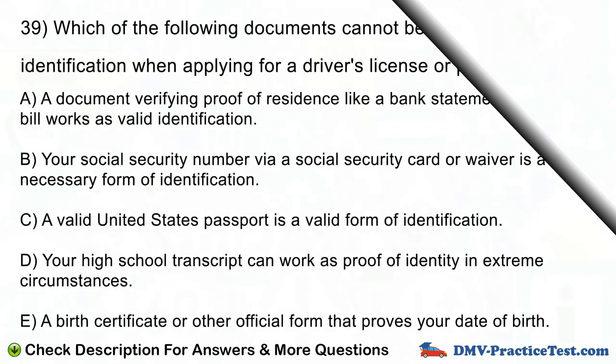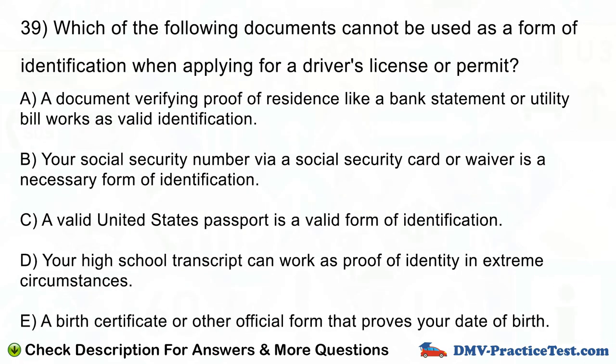Question number 39. Which of the following documents cannot be used as a form of identification when applying for a driver's license or permit? A. A document verifying proof of residence like a bank statement or utility bill. B. Your social security number via social security card or waiver. C. A valid United States passport. D. Your high school transcript. E. A birth certificate or other official form that proves your date of birth.